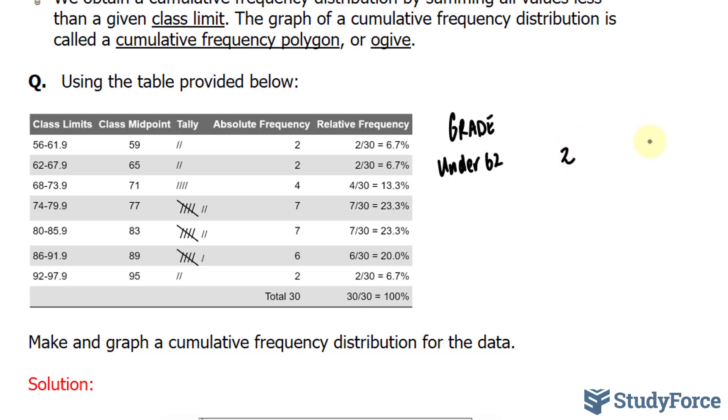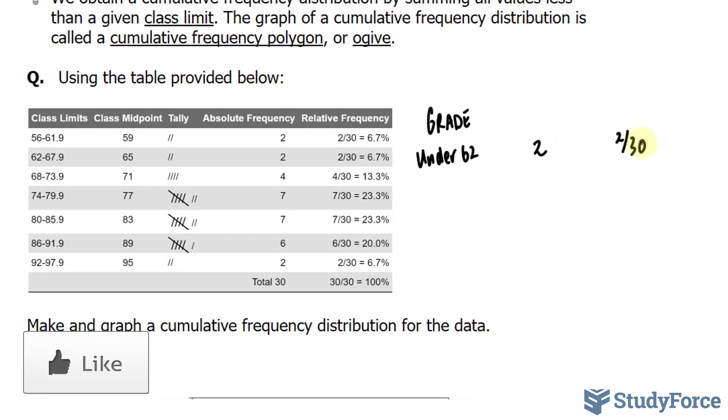And that represents 2 out of the 30. And the cumulative relative frequency percentage here is 6.7%. Now we have to count how many students scored a grade under 68. Anything after 68 doesn't count. Anything before does. So 2 plus 2 is 4. 4 over 30. And that is a percentage of 13.3.